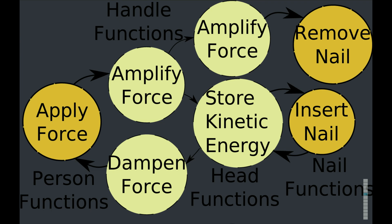It goes apply force. The person applies the force. Amplify force. The handle amplifies it. And it stores kinetic energy. The head stores the kinetic energy as the hammer is rotated until it finally hits. The nail insert function. And the nail insert function has some recoil. So that goes back into the head. And it goes back into the hand. And it eventually goes into the human as well.